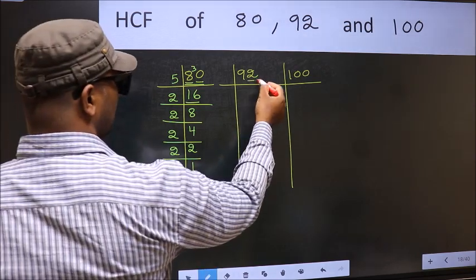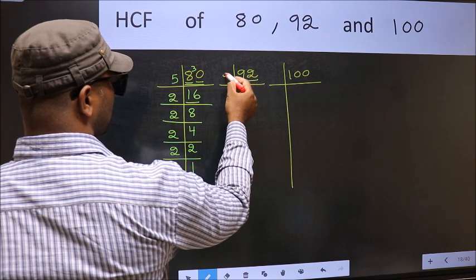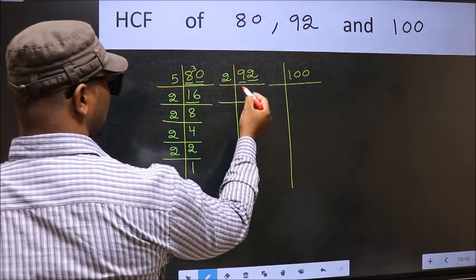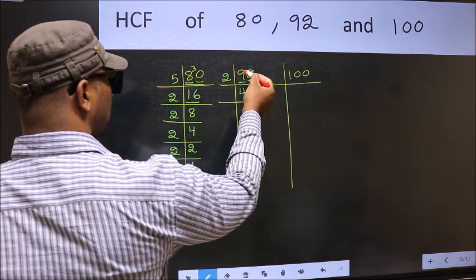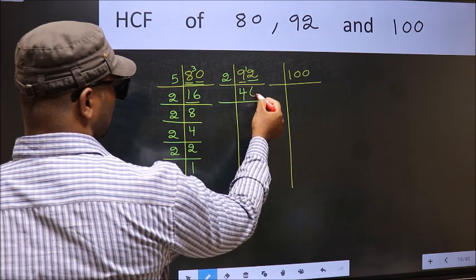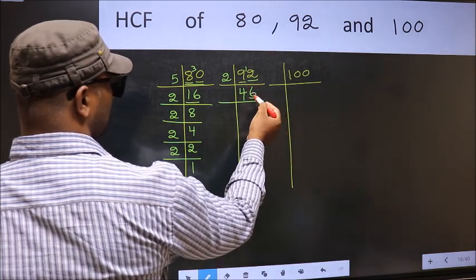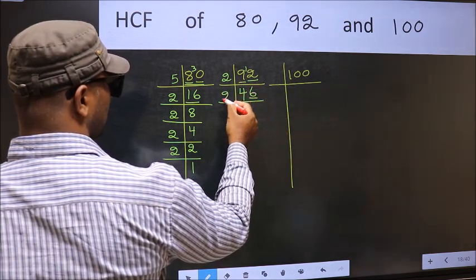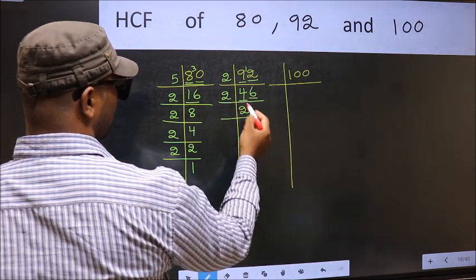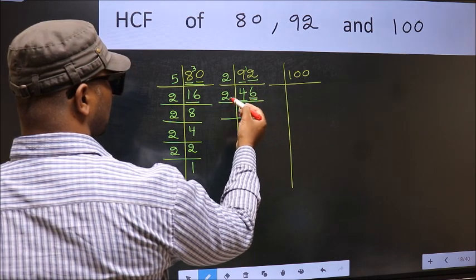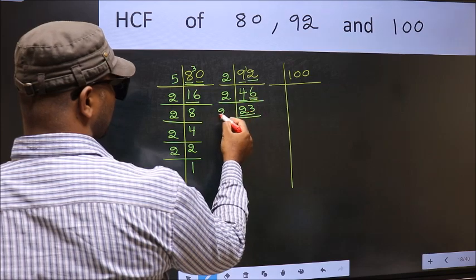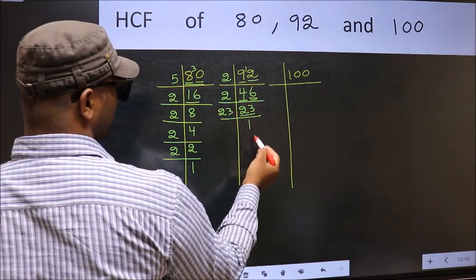Now the other number. Last digit 2, even so take 2. First number 9. A number close to 9 in 2 table is 2, 4 is 8. 9 minus 8, 1, carry it forward 12. When do we get 12 in 2 table? 2, 6, 12. Now last digit 6, even so take 2. First number 4. When do we get 4 in 2 table? 2, 2 is 4. The other number 6. When do we get 6 in 2 table? 2, 3 is 6. Now 23, 23 is a prime number so 23 once 23.